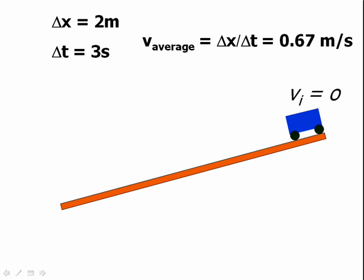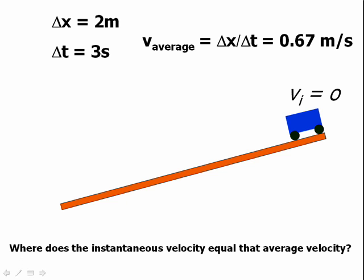Now, the question is, where would this cart be on the ramp when its instantaneous velocity had the same value as the average velocity, 0.67 meters per second?